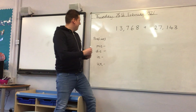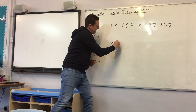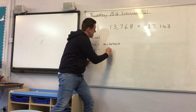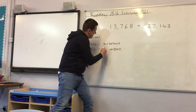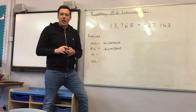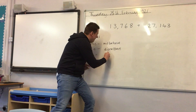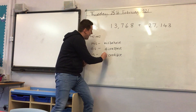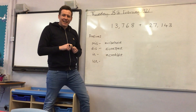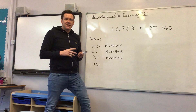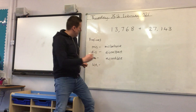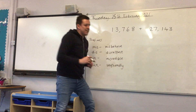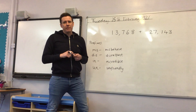So for example, if I have 'behave' and I add 'mis' to it, it becomes the opposite: 'misbehave'. If I have 'respect' and I add 'dis' to it, it becomes the opposite again: 'disrespect'. If I have the word 'credible' — that means believable — and I add 'in' to it to make 'incredible', then it becomes the opposite, something that's unbelievable. And finally, if I have 'friendly' and I add the prefix 'un' to it, then I end up with 'unfriendly', which is of course the opposite.